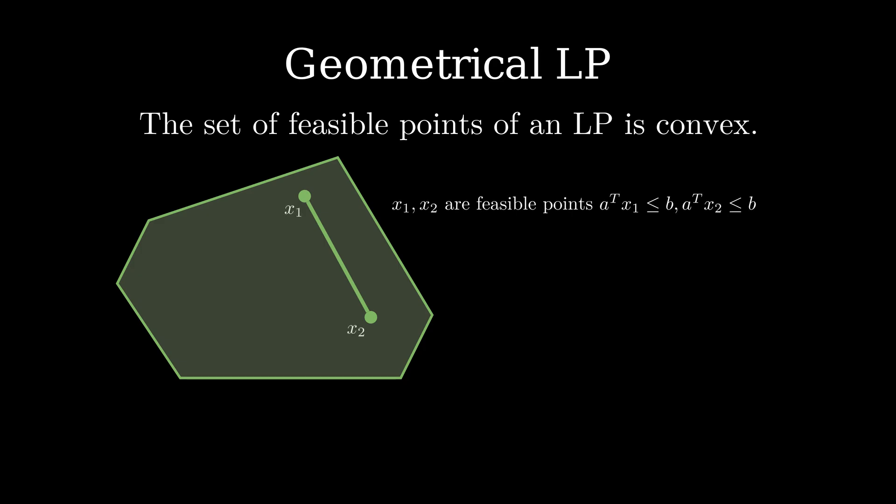To prove this, we take two feasible points x^1 and x^2. Each point p on the line between x^1 and x^2 can be represented with a parameter gamma where gamma is between 0 and 1. Now we show that p is also a feasible point by proving that Ap is smaller or equal than b. We begin by plugging in the definition of p, rearrange the terms the following way. Then, we can upper bound x^1 and x^2 using the definition of a feasible point. The terms then simplify to b. This shows that each point p on the line is also a feasible point. Therefore, the set of feasible points must be convex.